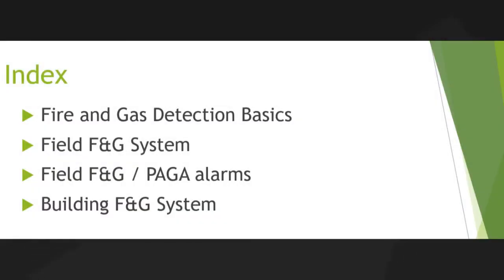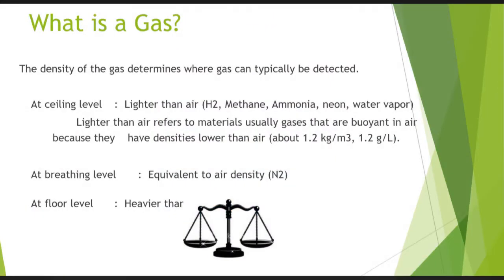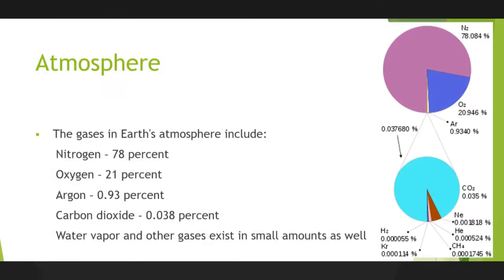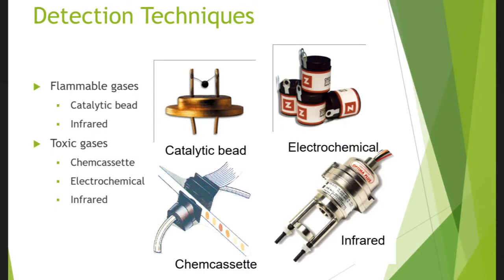Fire and Gas Detection Basics. Field F&G System, Field F&G / PAGA Alarms, Building F&G System. Types of instruments include: Flame Detector, Manual Call Point, Fire Point, Gas Detector, Open Path Detector, F&G Hooter and Beacons, PAGA F&G Beacon and Heater.